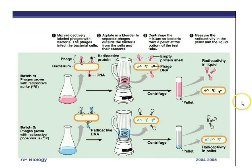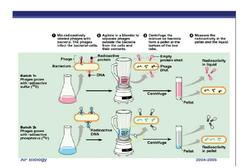Here is a more descriptive explanation. Radioactive protein coats on viruses were added to bacteria, but the protein coats never entered the bacterial cells. After centrifuge, the bacterial cells on the bottom had no radioactivity. In the second experiment, radioactive phosphorus was added to DNA, and after the cells were centrifuged, the bacteria on the bottom were radioactive — showing the radioactive DNA had entered the bacterial cells. This confirmed that DNA, not proteins, are the genetic molecules that pass on information.